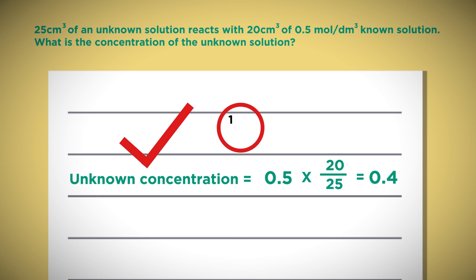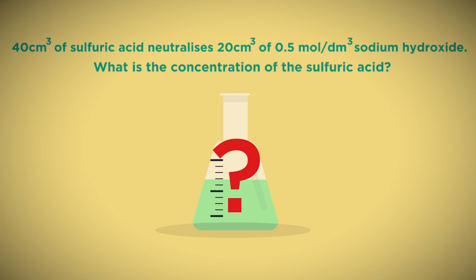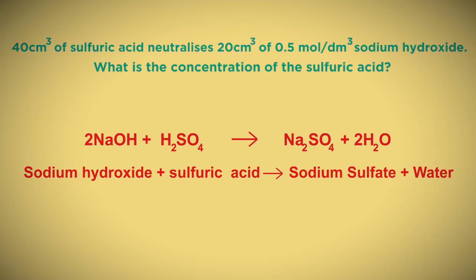But you may not pick up all the marks in a test or exam using this formula, because it doesn't show your understanding. Sometimes you need to work out the proportions involved in the reaction by looking at the equation for the reaction. For example, two moles of sodium hydroxide reacts with one mole of sulfuric acid.